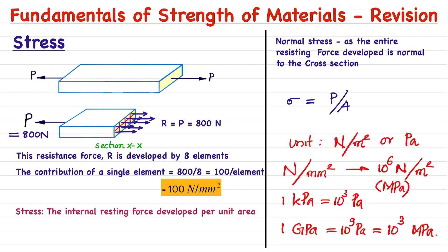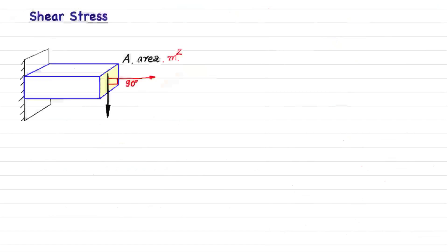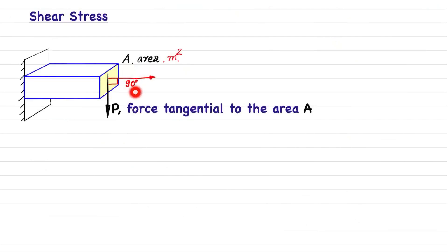We have learned normal stress where the entire resisting force is normal to the cross section. Now, what if the resisting force developed is tangential to the cross section? Here the applied load P is tangential to the area A. As a result, if you take any cross section within the bar, the resisting force developed will also be in a tangential direction to the area, at 90 degrees with respect to the normal. Such a force develops stress known as shear stress. Shear stress is represented by tau and equals shear force P divided by shear area A. Its unit is also newtons per meter square.